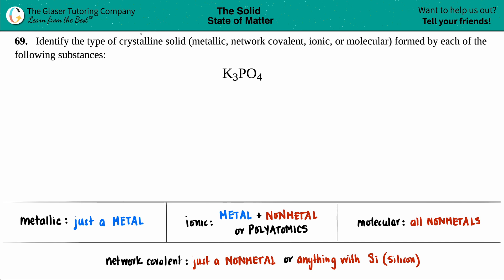Number 69: identify the type of crystalline solid (metallic, network covalent, ionic, or molecular) formed by each of the following substances. We have K3PO4, which is potassium phosphate.